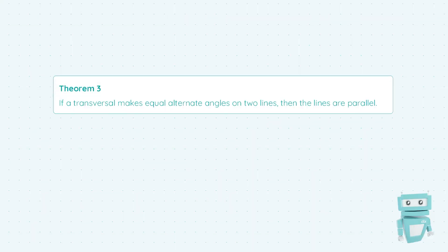Hi guys, my name is Sean and I got a H1 in Leaving Cert Maths. In this video we're going to be looking at Theorem 3, which states that if a transversal makes equal alternate angles on two lines, then the lines are parallel.